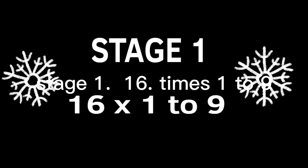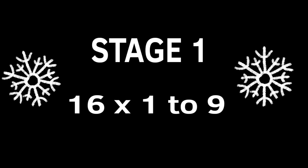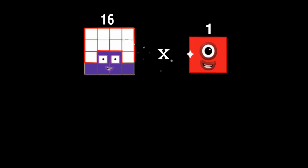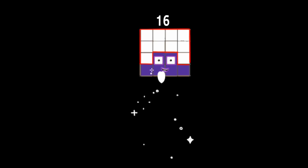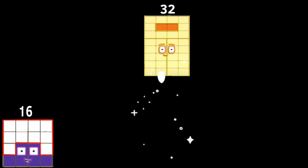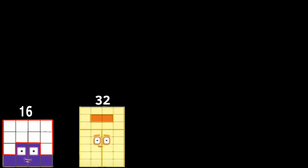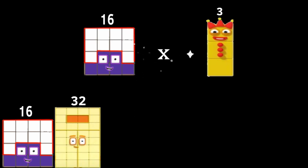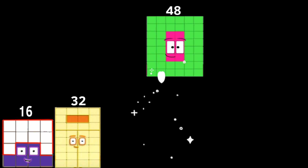Stage 1: 16 times 1 to 9. 16 times 1 equals 16. 16 times 2 equals 32. 16 times 3 equals 48.